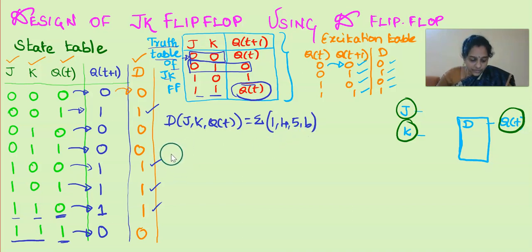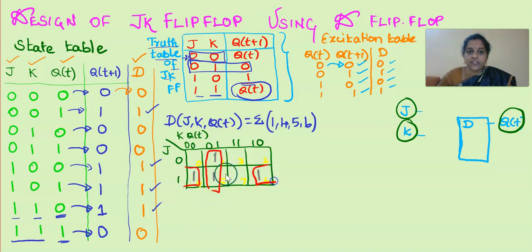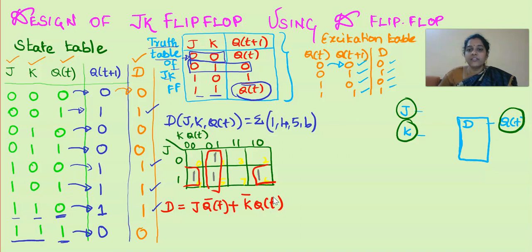So we can solve this problem and find the expression for D. For that, we need to draw a three-variable K-map. We fill the cells 1, 4, 5, and 6 in the K-map. Making a grouping, we get the expression: D = J·Q̄(T) + K̄·Q(T).